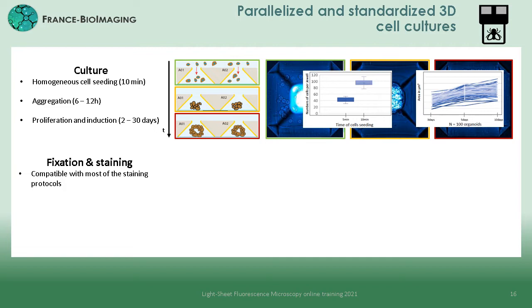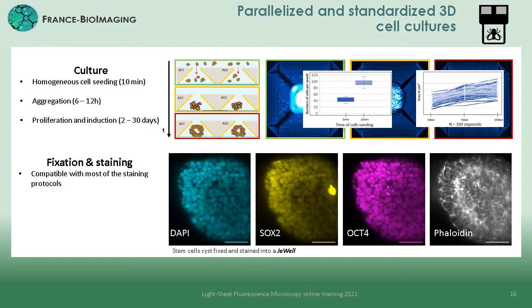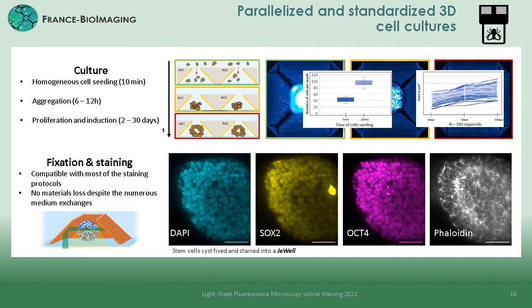Then, thanks to our capacity to remove and pour new media into the SOSPIN device without drying out the wells, all subsequent sample preparations can be done directly in the SOSPIN device — from fixation to immunostaining steps — greatly limiting any sample manipulation. Here we can stress that the shape of the wells as truncated pyramids enables trapping our 3D cell culture into the G-wells, avoiding any material loss despite the numerous solution exchanges for culture, fixation, and staining.